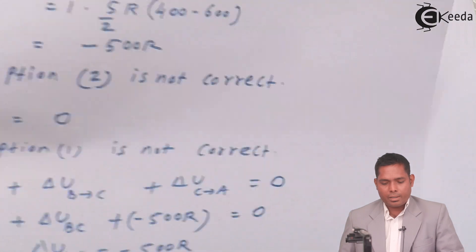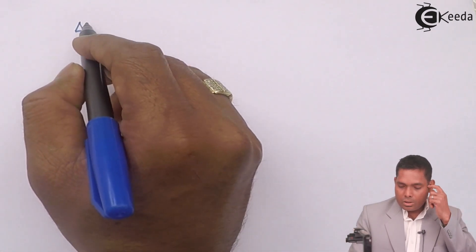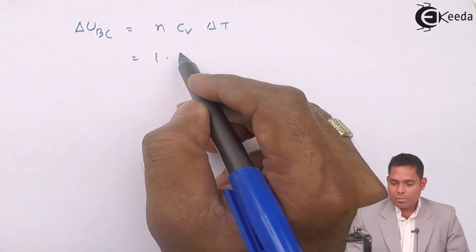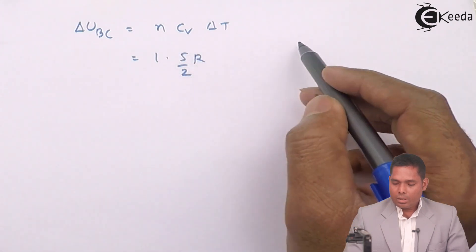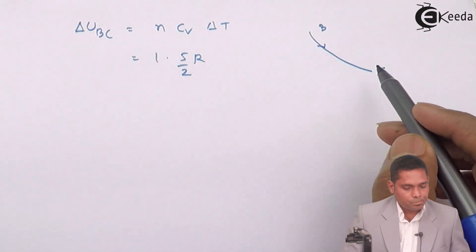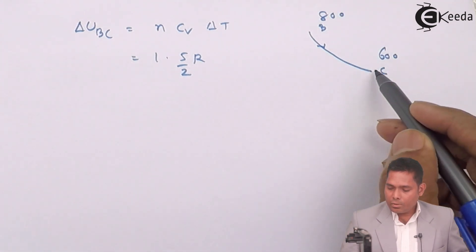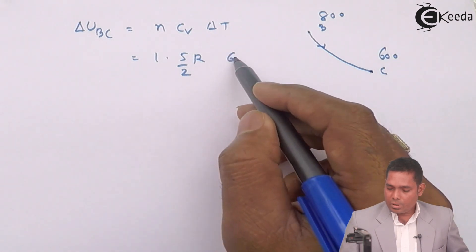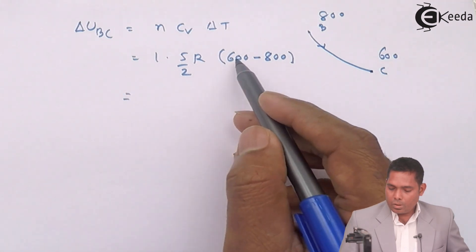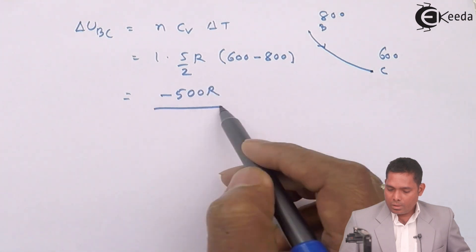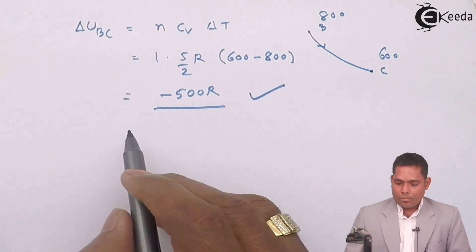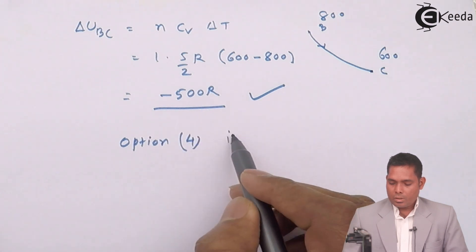We can also verify by direct calculation: ΔU(B→C) = n·Cv·ΔT = 1 × (5/2)R × (600 − 800) = (5/2)R × (−200) = −500R. Both methods give −500R, confirming that option number 4 is the correct answer.